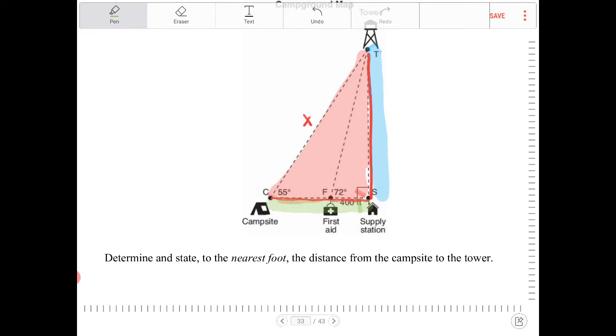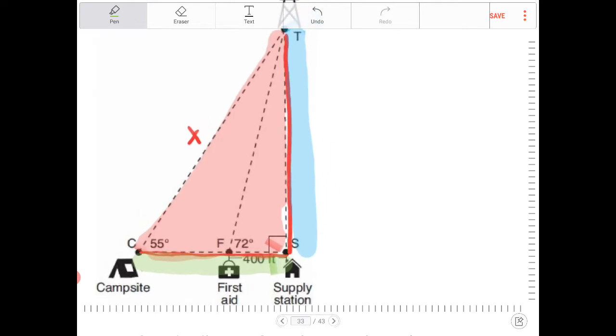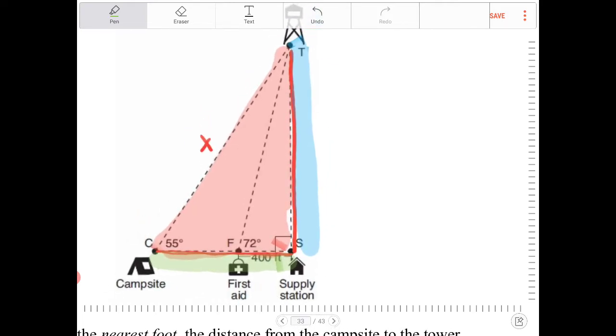So with the information that I have now, which sides would I be able to find first? Would I be able to find TS or would I be able to find CS? So looking at this, I'm given information about the leg of the smaller right triangle, which in return, I am then going to be able to find out what is the height of the smaller right triangle. I can find out what the length of TS is.